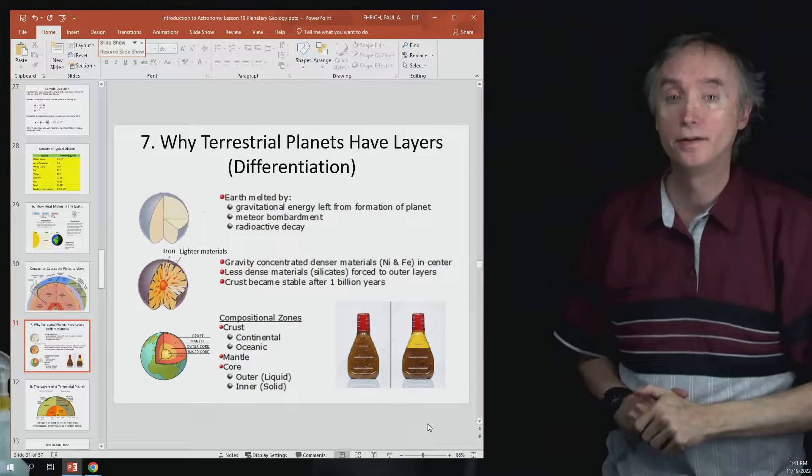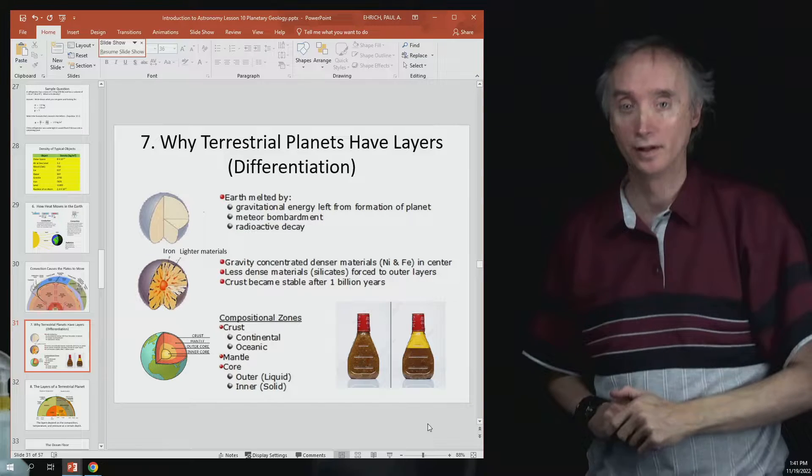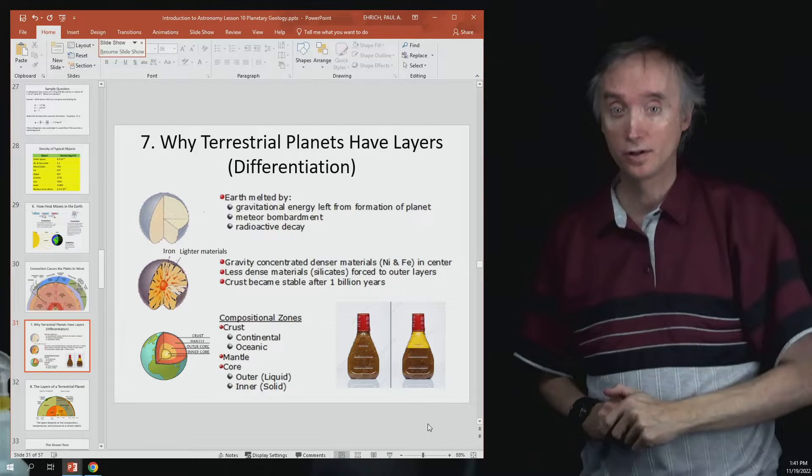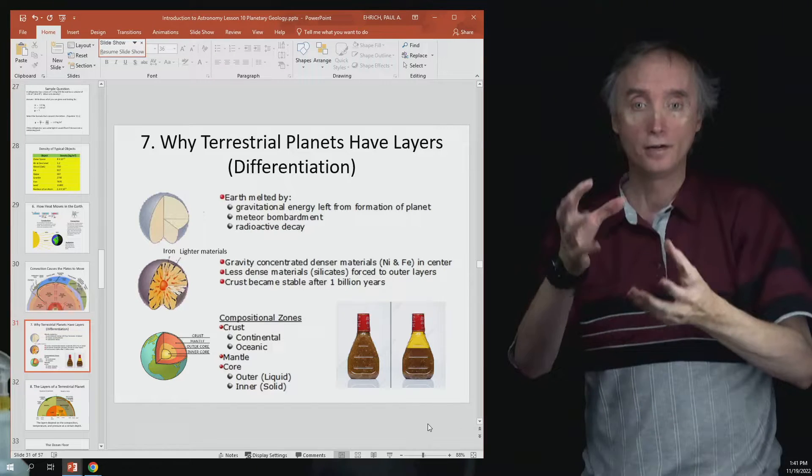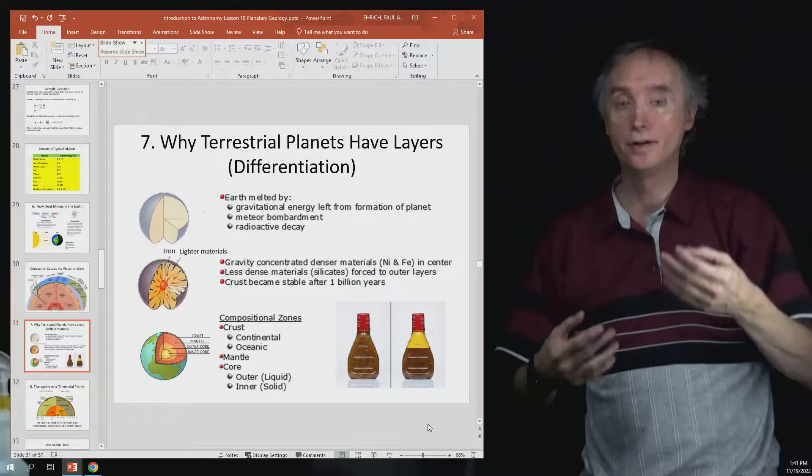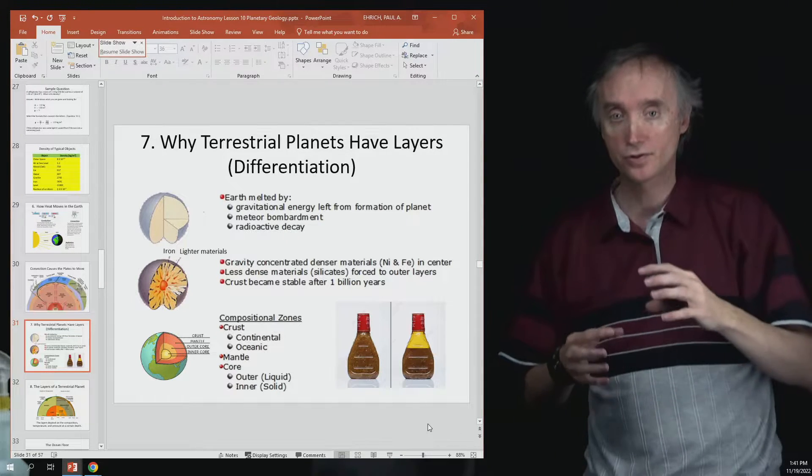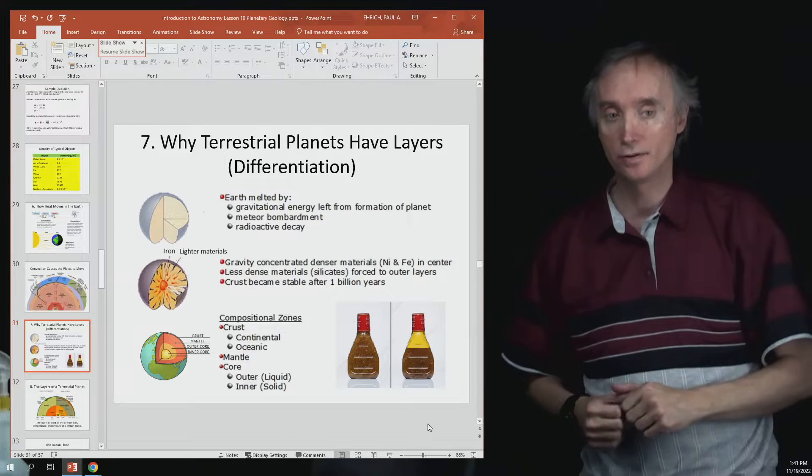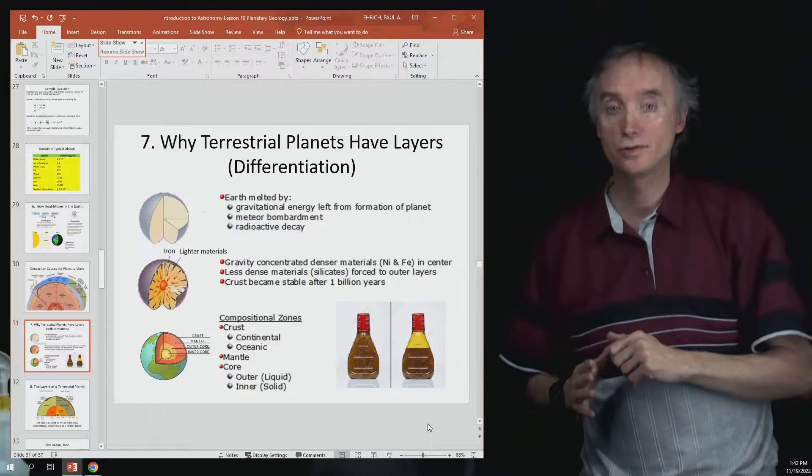Okay, I'm back and now we want to talk about why does the Earth have different layers. Originally when the Earth formed it was a uniform ball of materials that contain iron and silicon and oxygen, and all of these other elements were uniformly distributed inside the Earth. So why is it that the Earth has different layers today?